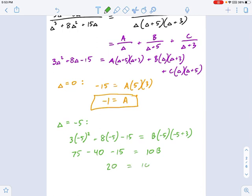So 75 minus 15 is 60, minus 40 is 20. So I get 20 equals 10B. So then B equals 2. All right, we're making progress.